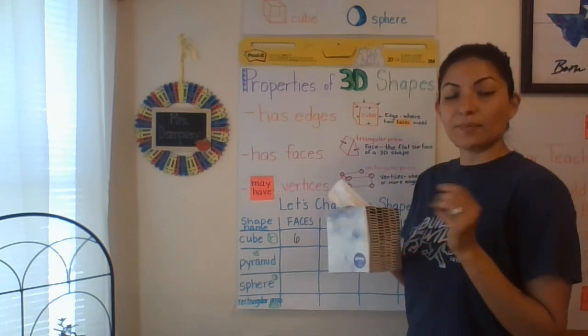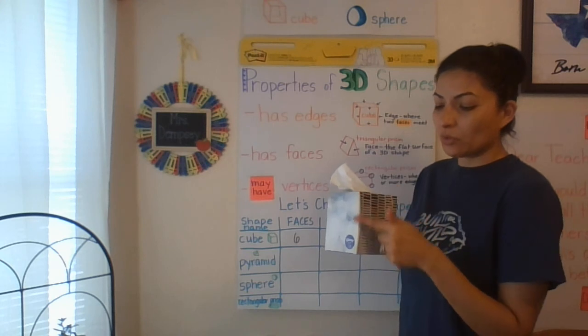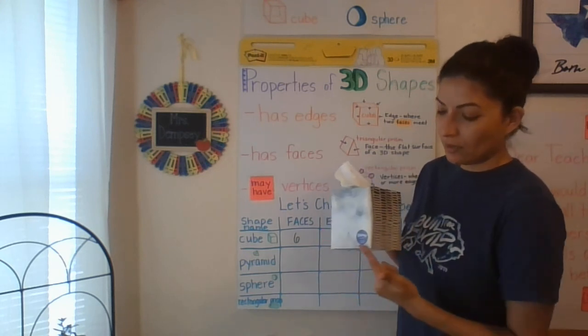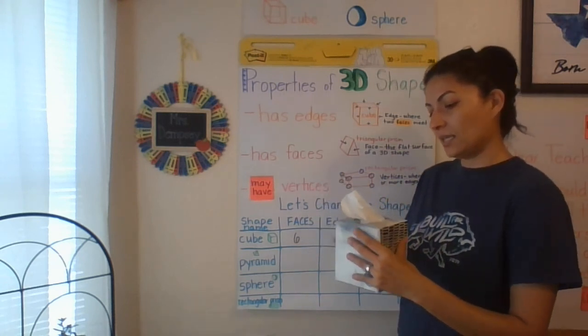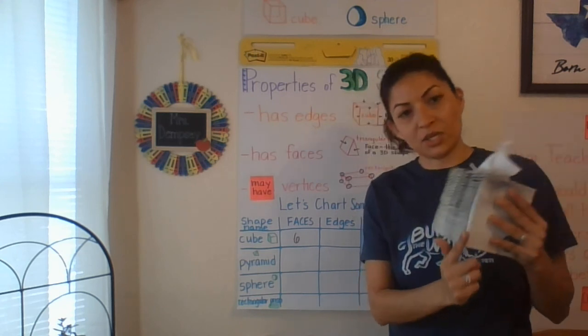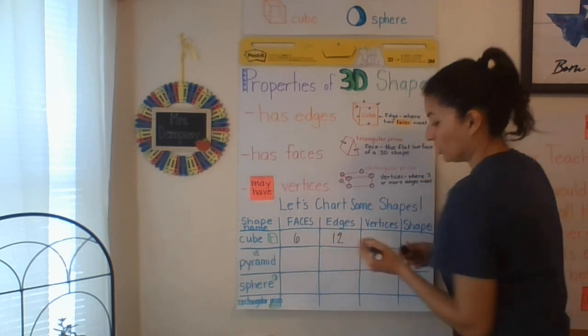Now, I want to look at the edges. So remember, the edges are where the flat surface both meet. So here would be 1 edge, 2, 3, 4, 5, 6, 7, 8, 9, 10, 11, 12. My 3D shape of a cube has 12 edges.